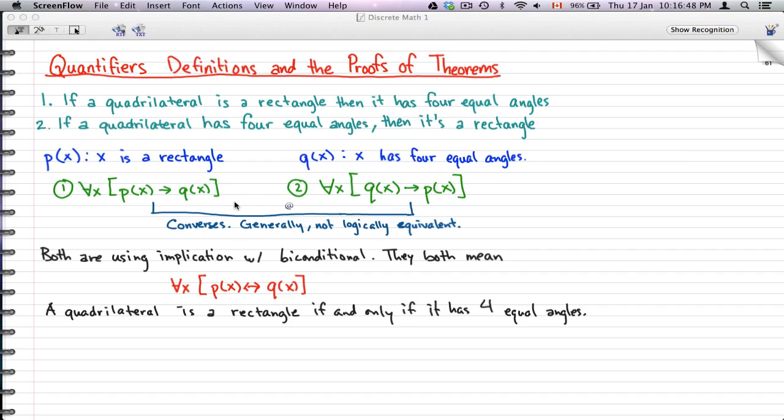Now these are converses. They're generally not logically equivalent. But when we have them both, when we have qx implies px and px implies qx, then we can get this symbolic definition. Both are using implication with biconditionals, so they both mean for all x, px is biconditional qx.